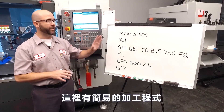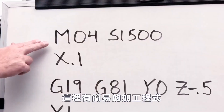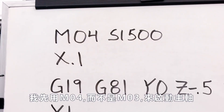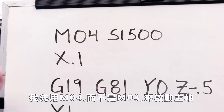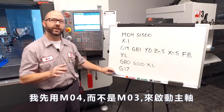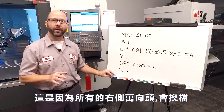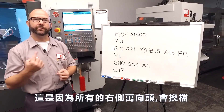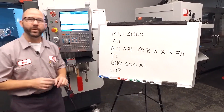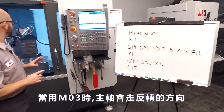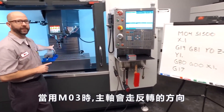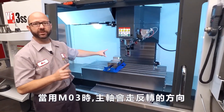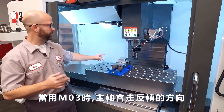Here's a simplified version of our program. Right off the bat we notice that I'm using an M4 and not an M3 to start my spindle. This is why almost all right-angled heads have gear reversal. When we command an M3 in our program, the spindle is going to go in the opposite direction we think.